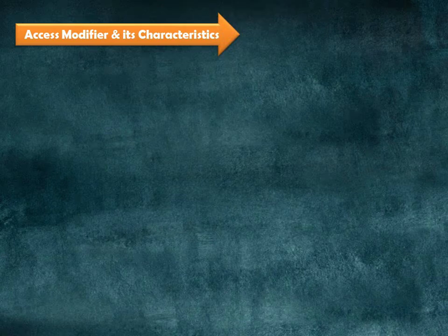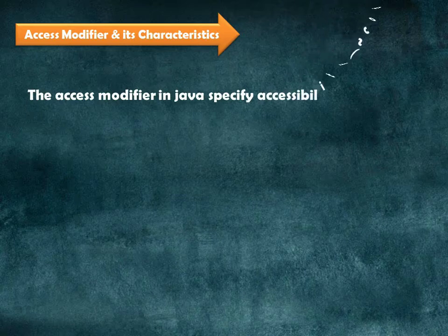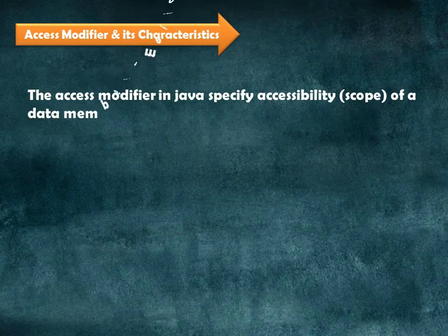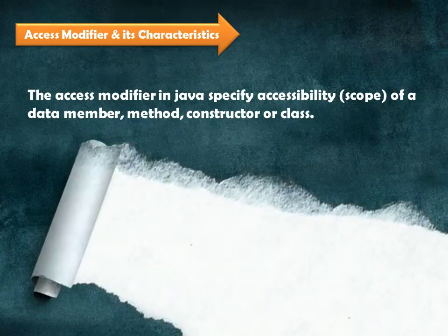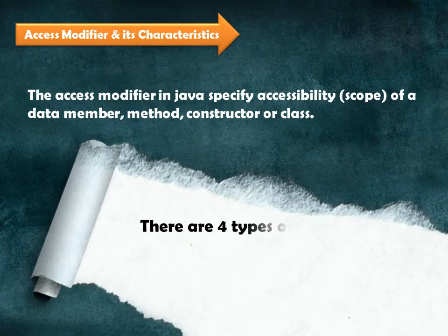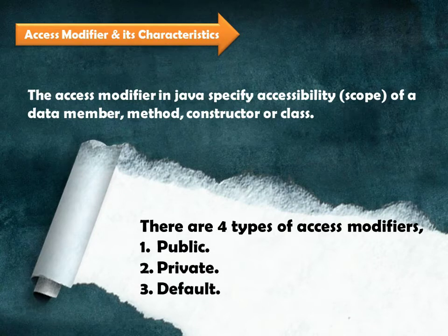Next, we will move on to access modifiers and their characteristics. Access modifiers in Java specify the accessibility of a data member, method, constructor, or class. There are four types of access modifiers: number one, public; number two, private; number three, default; and number four, protected.